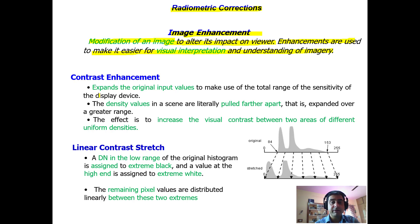Image enhancement can be achieved by contrast enhancement. You can expand the contrast values, just as you increase or decrease contrast on a mobile image to make it look more appealing. The density values in a scene are literally pulled apart, and the effect is to increase visual contrast between two areas of uniform densities.